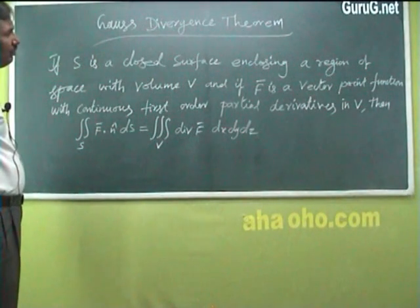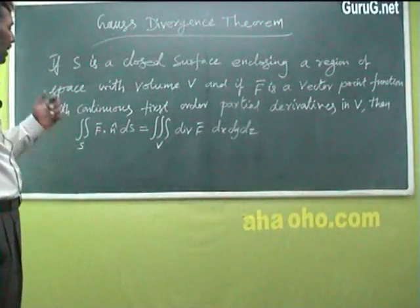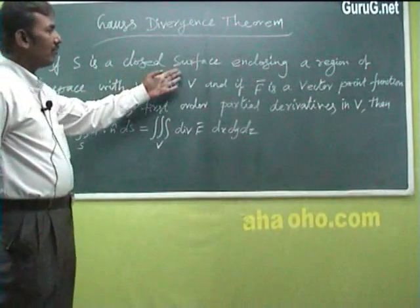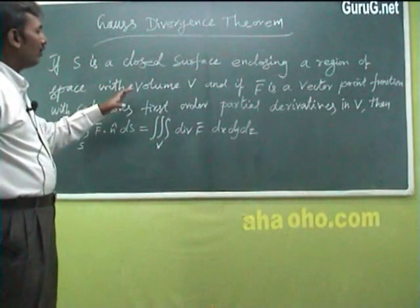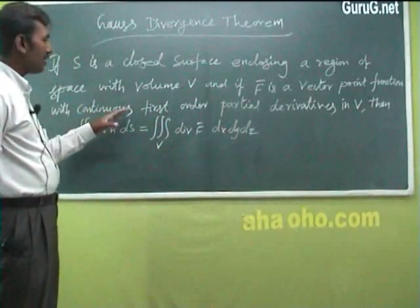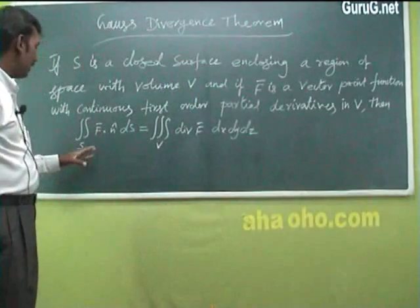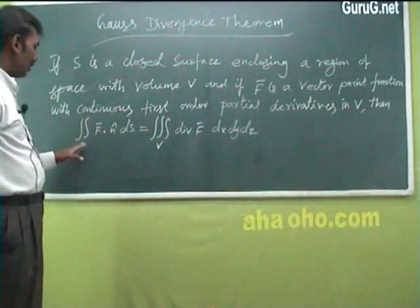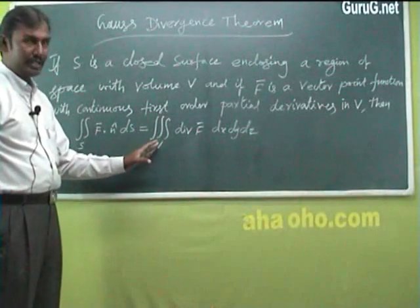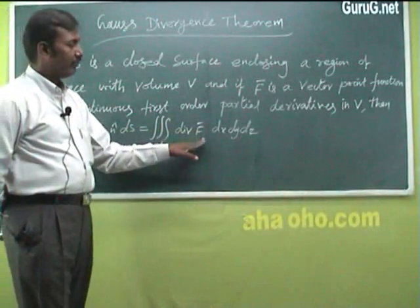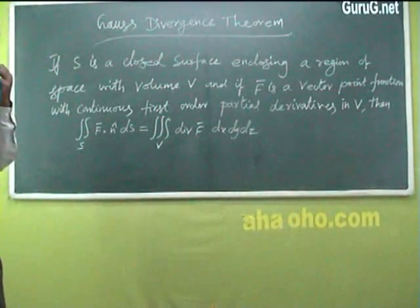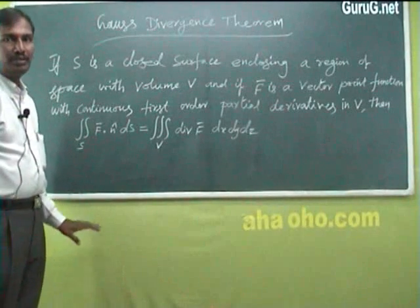The Gauss Divergence Theorem. There is a relation between the double integral and the volume integral. If S is a closed surface enclosing a region of space with volume V, and F is a vector point function with continuous first-order partial derivatives in V, then the double integral over S of F·n̂ dS equals the triple integral over V of divergence of F dx dy dz. This is the statement of the Gauss Divergence Theorem.